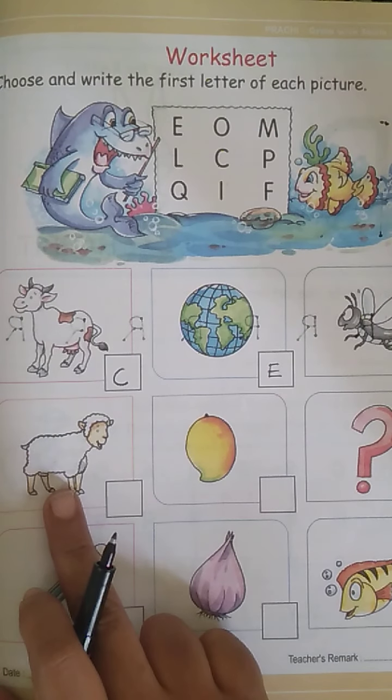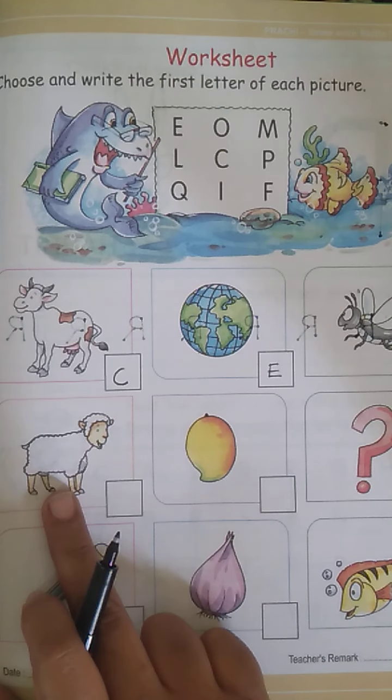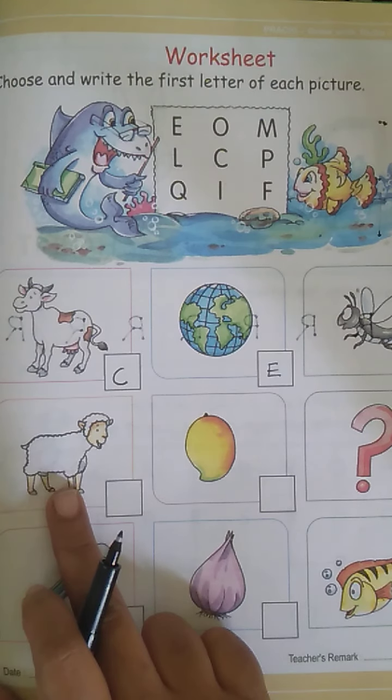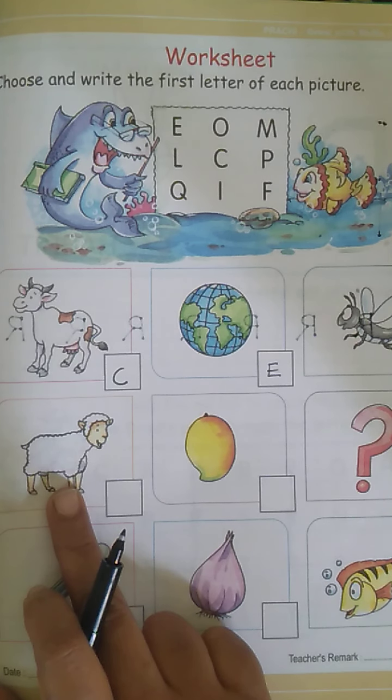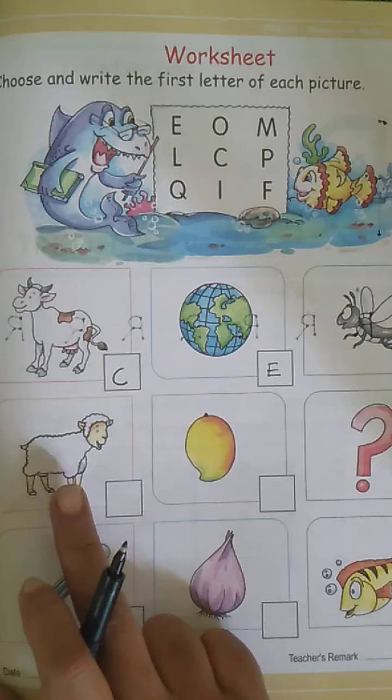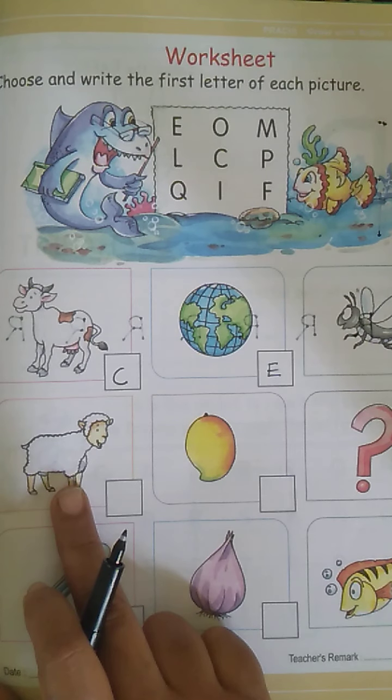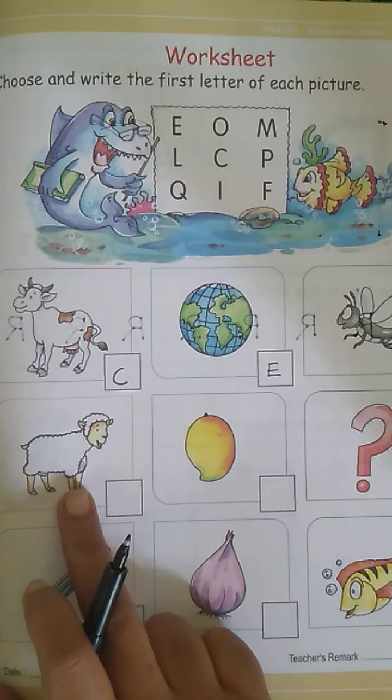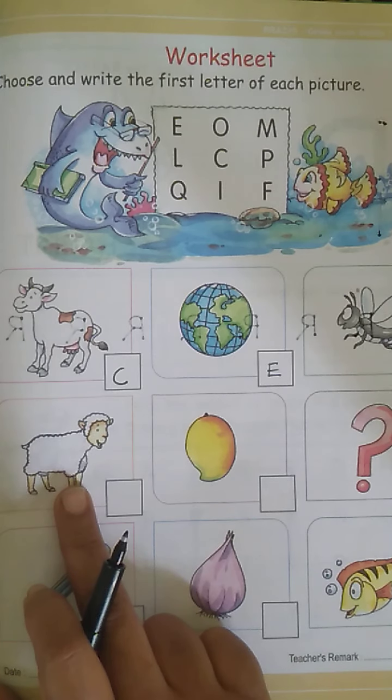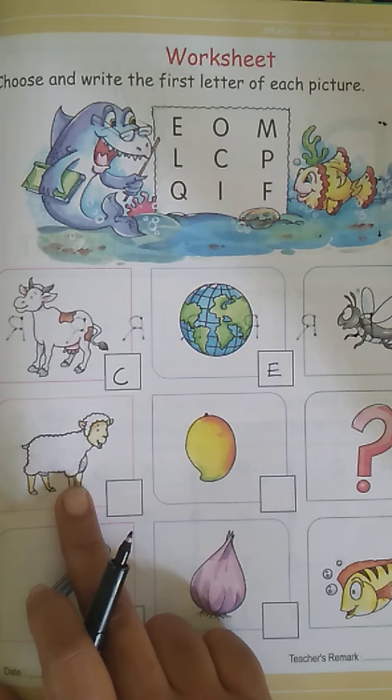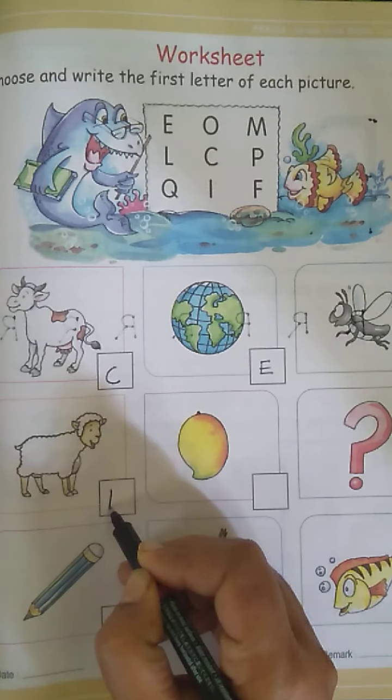Now, which farm animal is this? It's a lamb. Lamb is the baby sheep. When the sheep is small, it's called a lamb. Do you remember the rhyme? Mary had a little lamb. Yes. This is that lamb. Now, what is the first letter for the lamb? L. So, we are going to write the letter L.